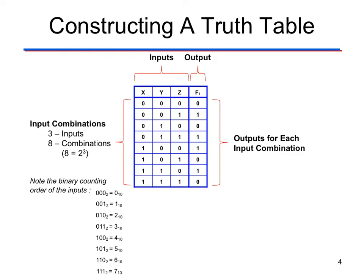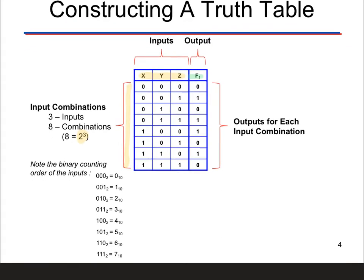Here's a good example of a truth table. The first three variables are inputs, and then the last one — F1 in this case — is our output column. In the input column, notice we have three inputs, so remember what we said: that means we'll have 2^3 combinations, which is eight. Notice that we have eight rows here — that's where the 2^N, where N is the number of inputs, comes into play.